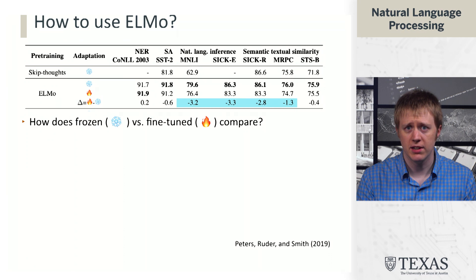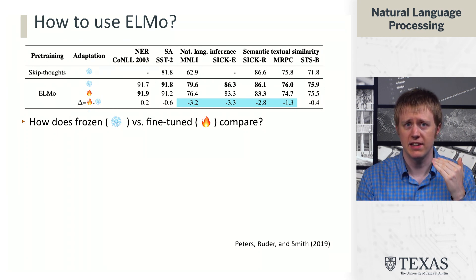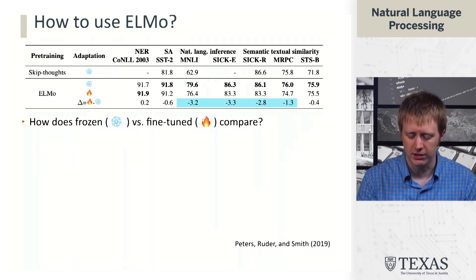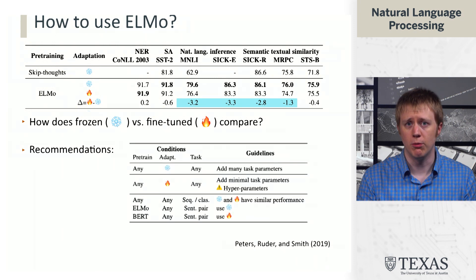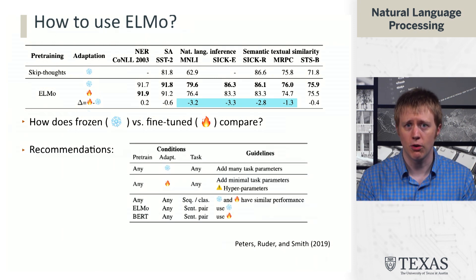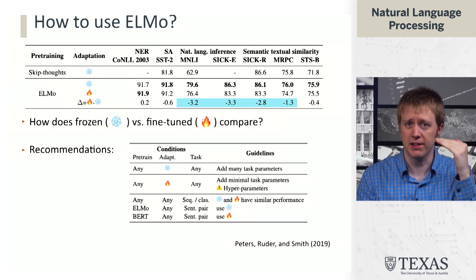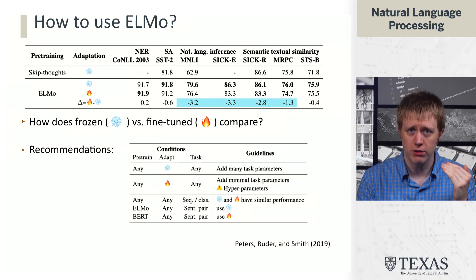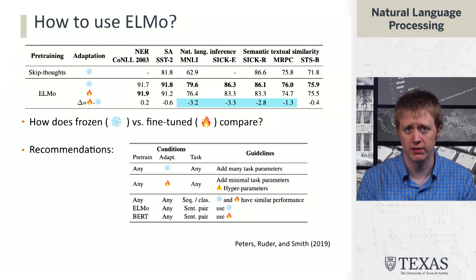In terms of how to use it, follow-on work compared keeping representations frozen versus fine-tuning them during learning. What they found was that for ELMo, it was better to keep things frozen. One of the big differences between ELMo and BERT — which is a masked language modeling-based pre-trained model — is that in BERT, fine-tuning actually works significantly better, and you don't want to keep the frozen embeddings.